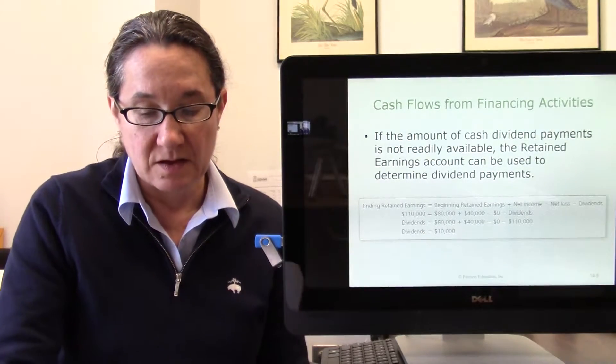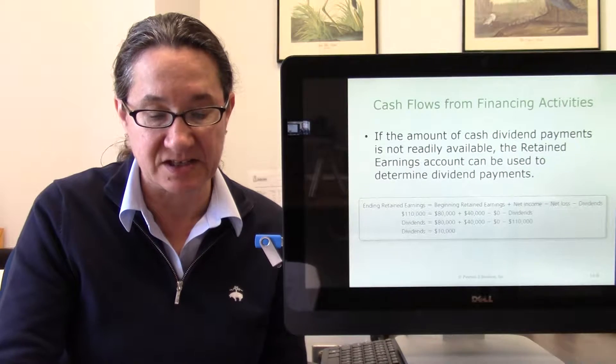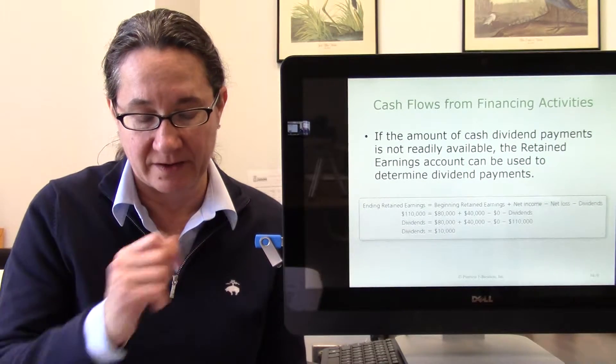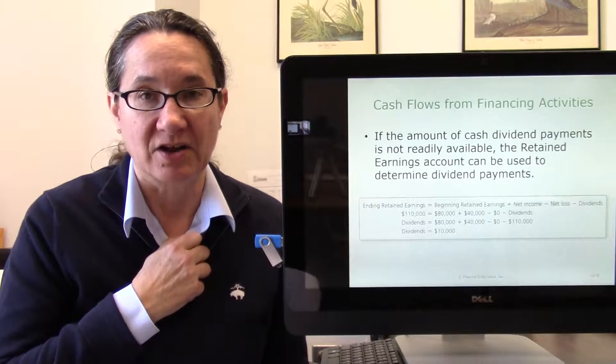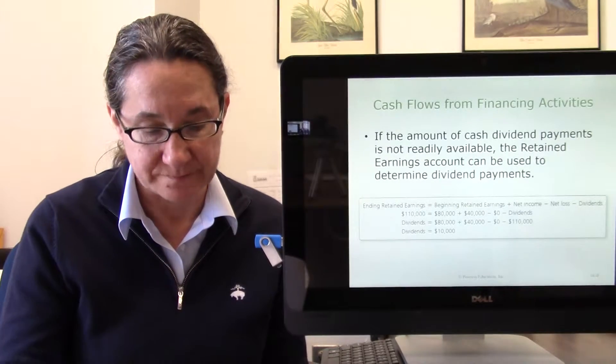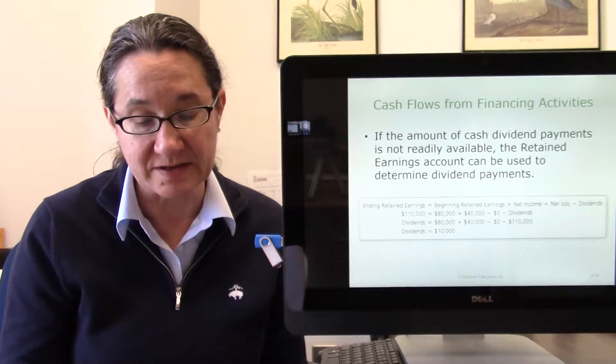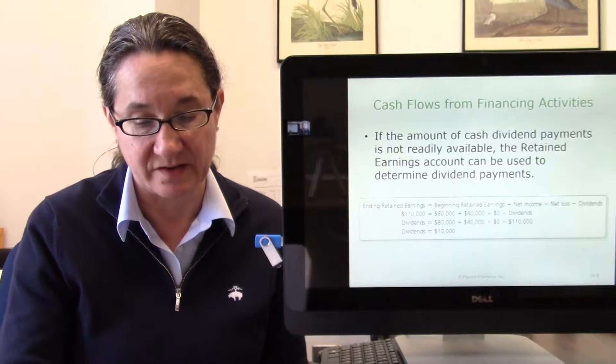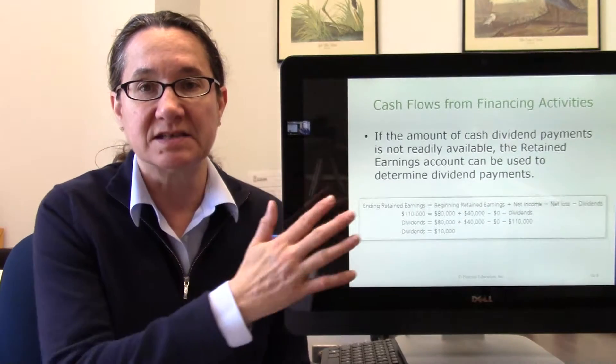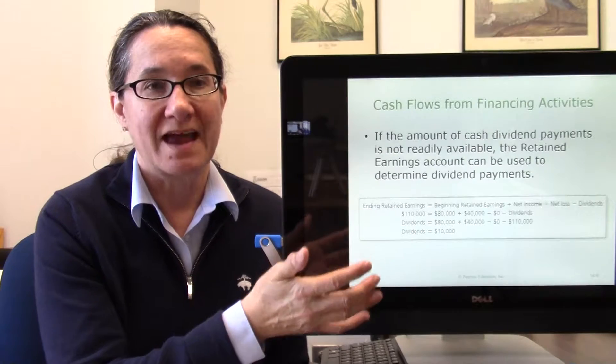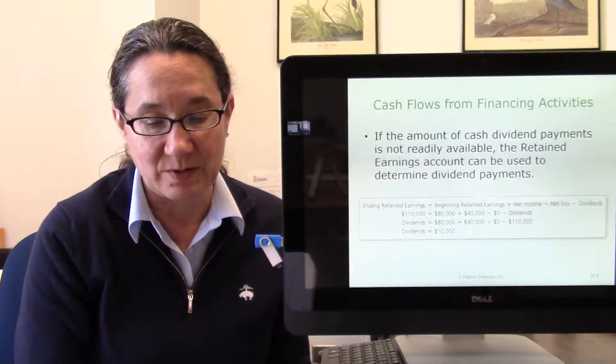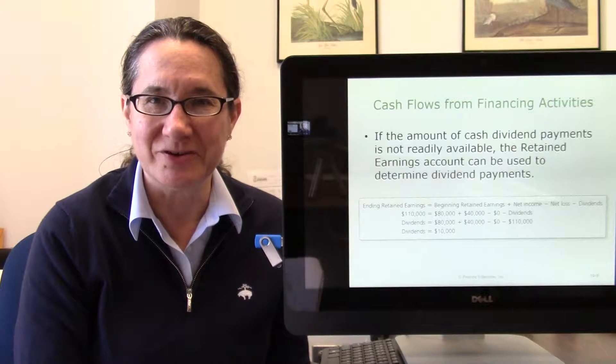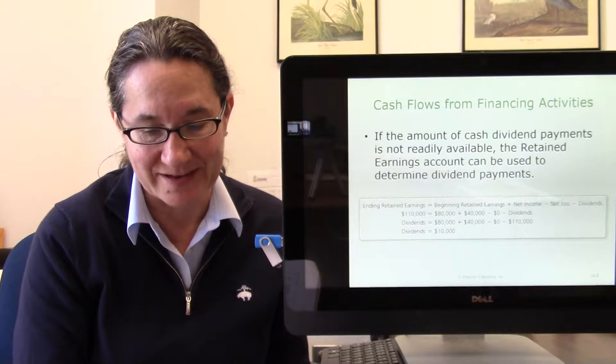If the amount of cash dividends payment is not readily available, which that would not be in our class, I'll just tell you dividends were this much. You can use the retained earnings account to determine dividends. Basically, this is showing you how to back into dividends. I don't know why that would not be available. They're just trying to get you to use some algebra to understand how retained earnings work.